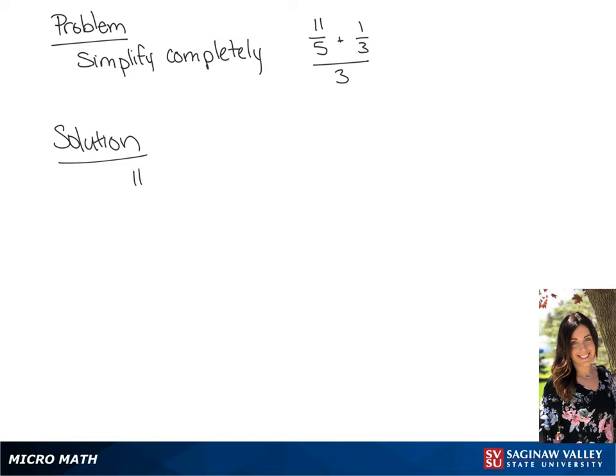We have 11 fifths plus 1 third, all over 3. We're going to find a common denominator for the fractions in the numerator.